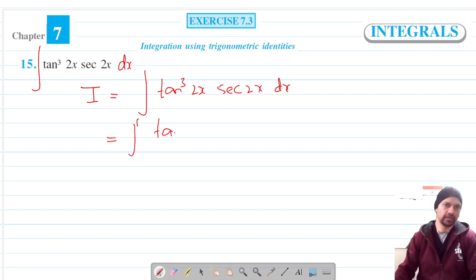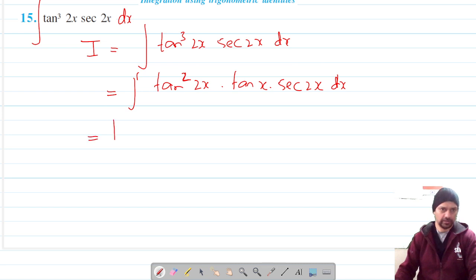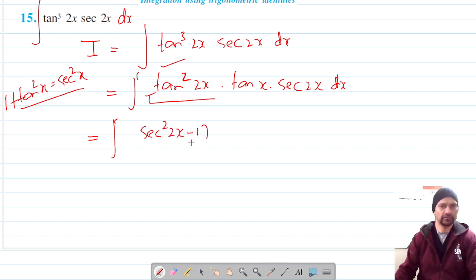And now we have to make this substitution but before that let me insert of tan²x because we know that 1 + tan²x is sec²x. So which gives me tan²(2x) is sec²(2x) minus 1 and now we are ready to make the substitution.